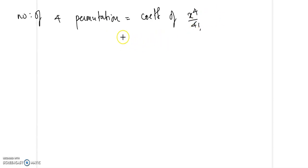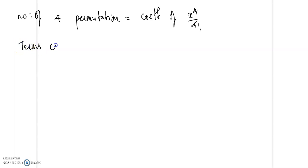So we need to find the terms containing x^4 in the product of these three factors and extract the coefficient of x^4.